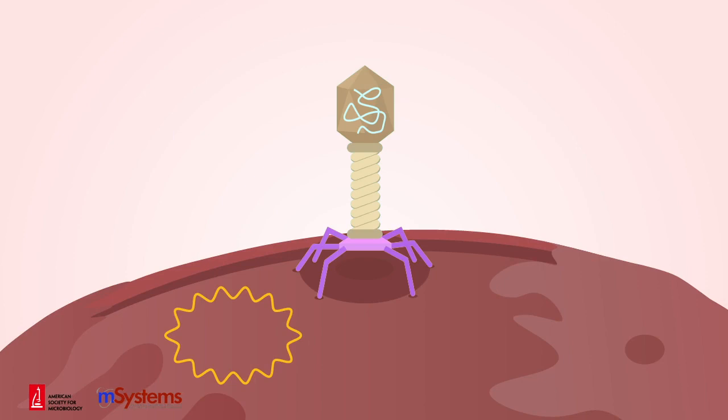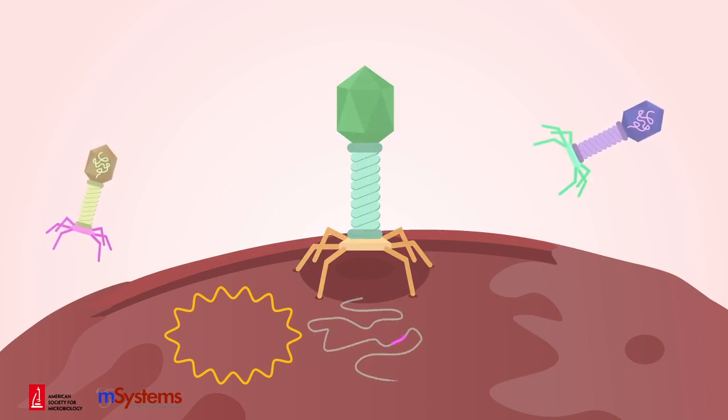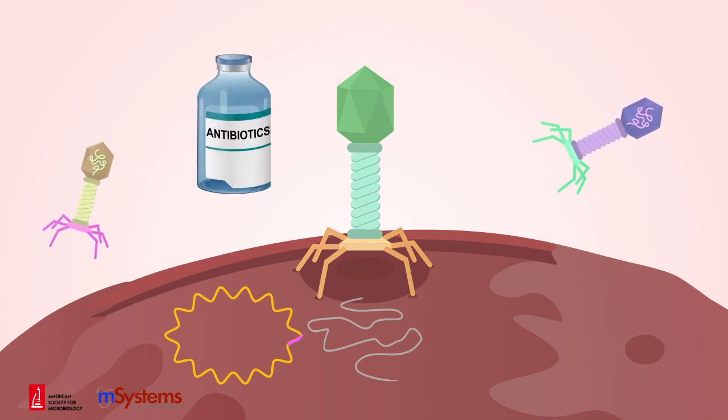Phages evolve quickly and share genetic information, often providing essential genes and functions when a bacterial host faces a new stress, such as antibiotics.